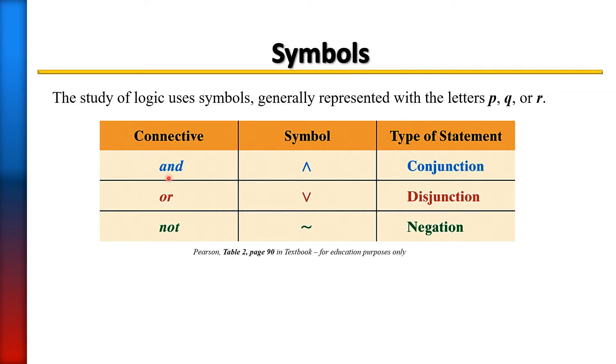The connective AND has a symbol that looks sort of like an upside-down V. The type of statement is a conjunction, so we use that symbol when we have a conjunction statement.